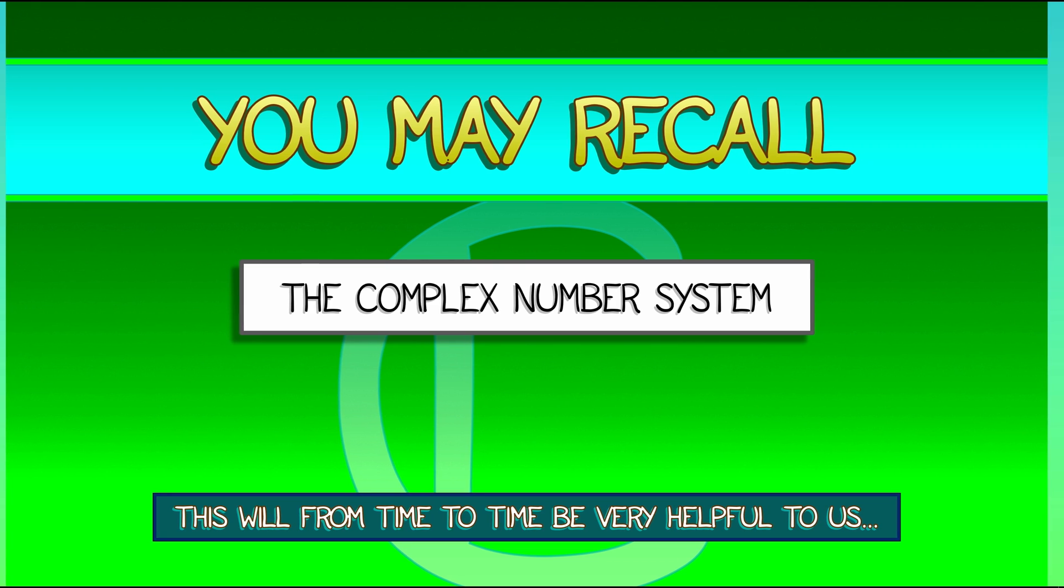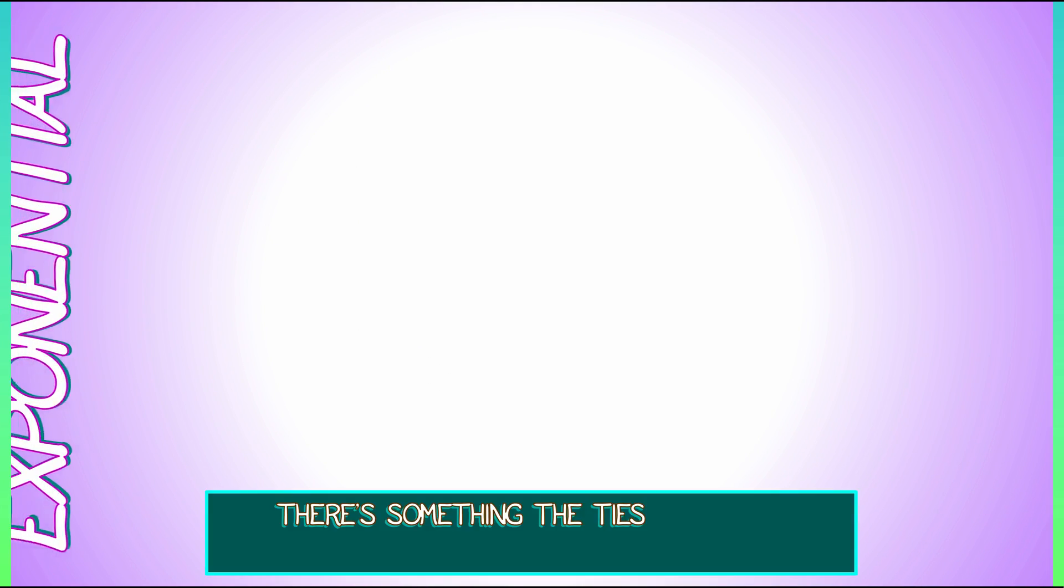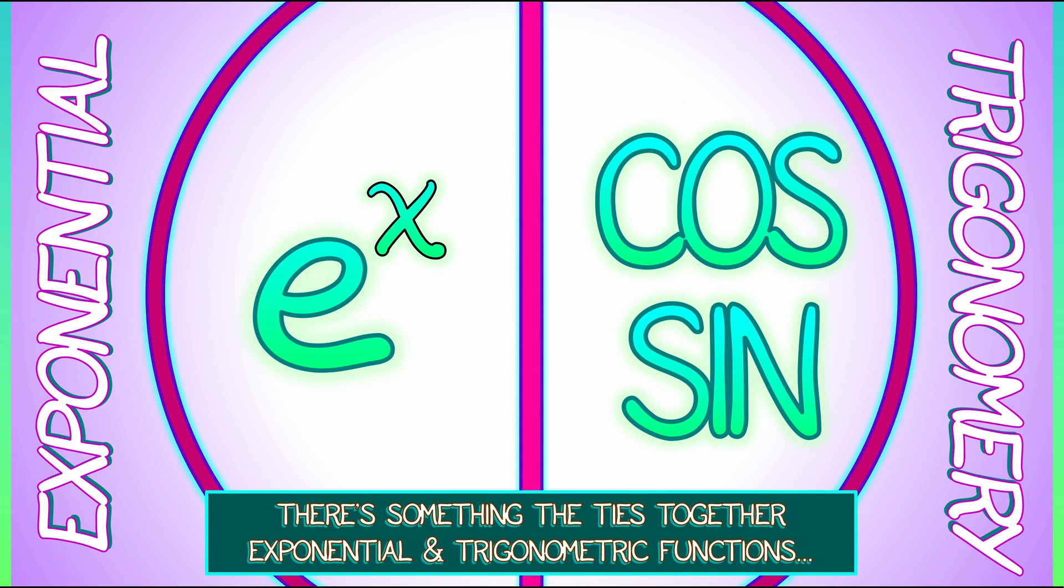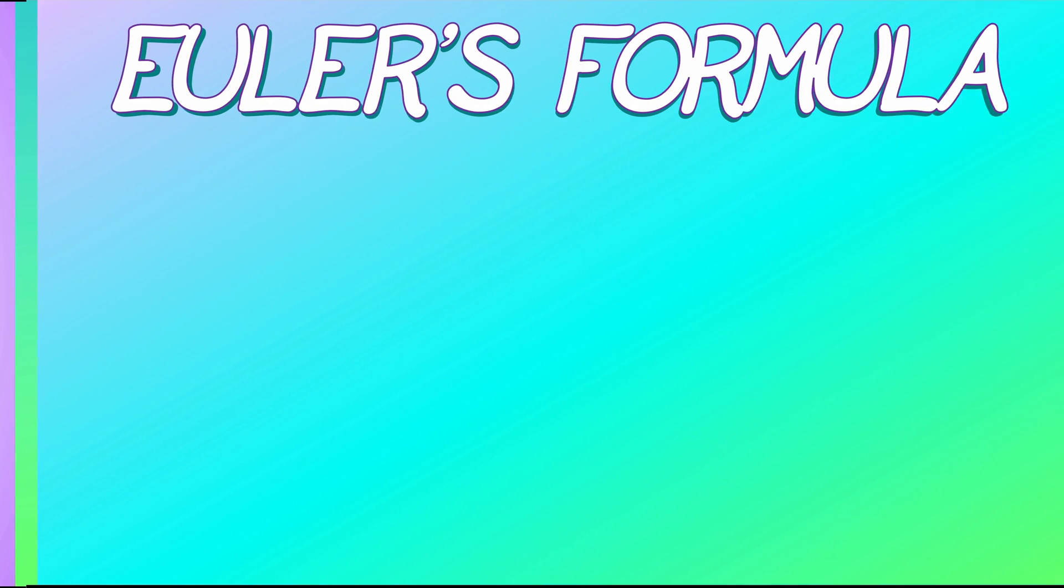Because when you work with complex numbers, there's something that ties together the exponential and the trigonometric functions, sine and cosine. And that wonderful thing that ties everything together is called Euler's formula.